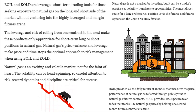The most direct route for a long or short risk position is via the futures and the futures options on the CME's NYMEX division. That's definitely going to be the most direct way to do it, and it will also help you avoid some of the negative decay factors in UNG, BOIL, and KOLD if you're just directly trading the futures contracts versus trading some of the other ETFs. BOIL provides the 2x daily return of an index that measures the price performance of natural gas through publicly traded natural gas futures contracts, and KOLD provides negative 2x exposure to an index that tracks US natural gas prices by holding one second-month futures contract at a time.